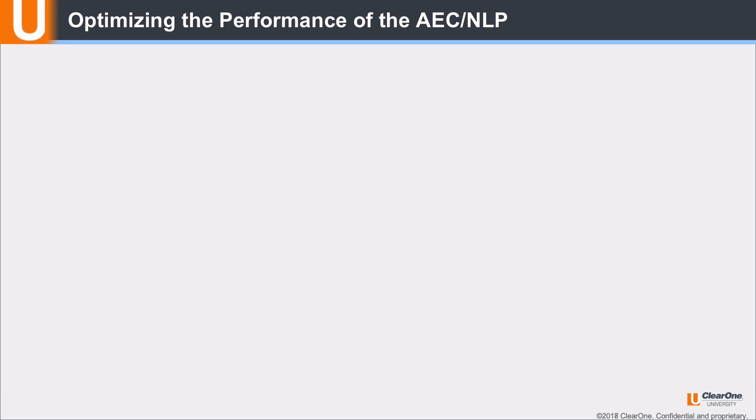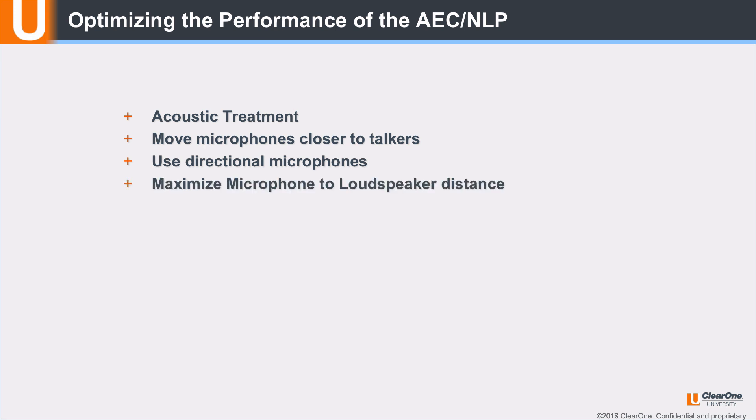So how can we improve the performance of the acoustic echo canceler? Acoustic treatment improves ERL. Move microphones closer to talkers. This improves ERL and the mic and talker to noise ratio. Use directional microphones to minimize acoustic echo and noise pickup. Maximize microphone to loudspeaker distance.